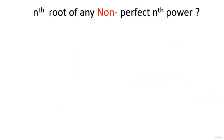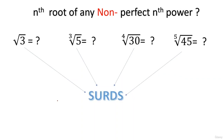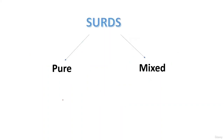The problem arises when you take the nth root of a non-perfect nth power. For example, three is not a perfect square, so the square root of three won't be an integer. Five is not a perfect cube — 125 is a perfect cube, but five itself is not — so the cube root of five won't be an integer. Similarly for the fourth root of 30, fifth root of 45, and so on. All these are called surds — they are irrational numbers, specifically the nth root of non-perfect nth powers.